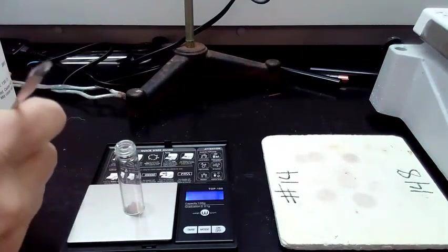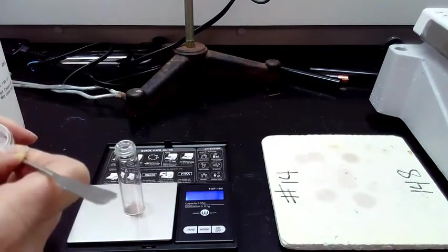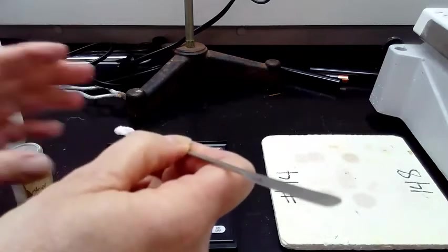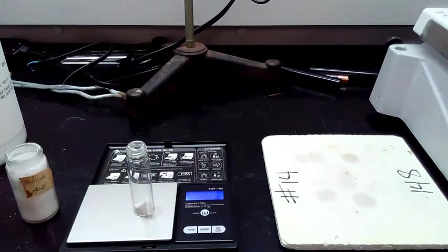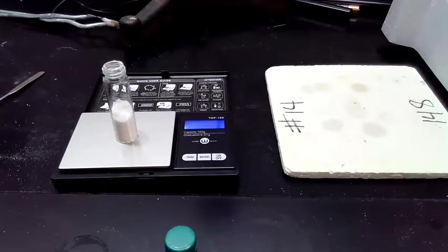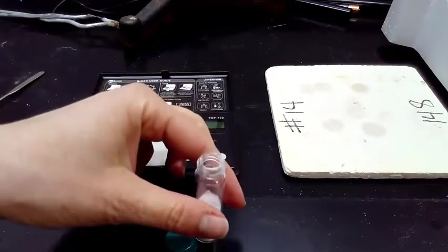You're going to mass out approximately 1.5 grams and you want to record that in your data table. So now we have the salicylic acid in the vial.